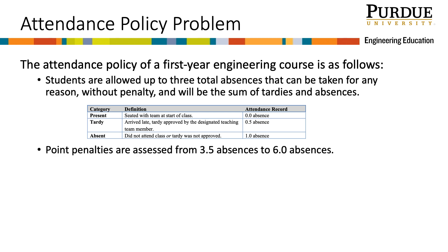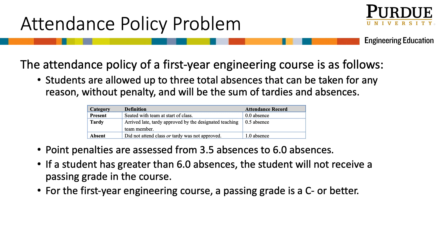Point penalties are assessed from 3.5 absences to 6.0 absences. These penalties are points taken from a student's total points, and therefore, are included in the final grade. If a student has greater than 6.0 absences, the student cannot receive a passing grade in the course. For the first year engineering course, a passing grade is C- or better.